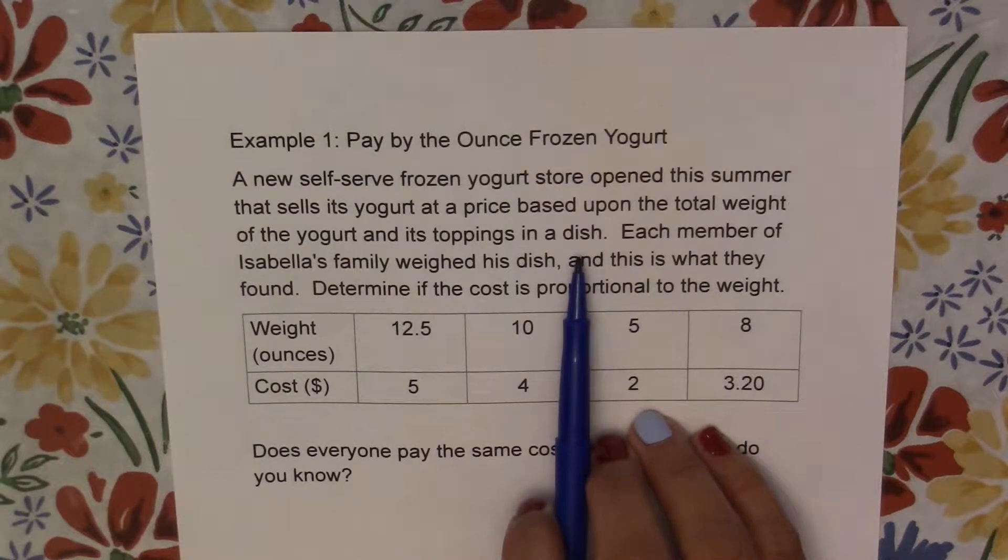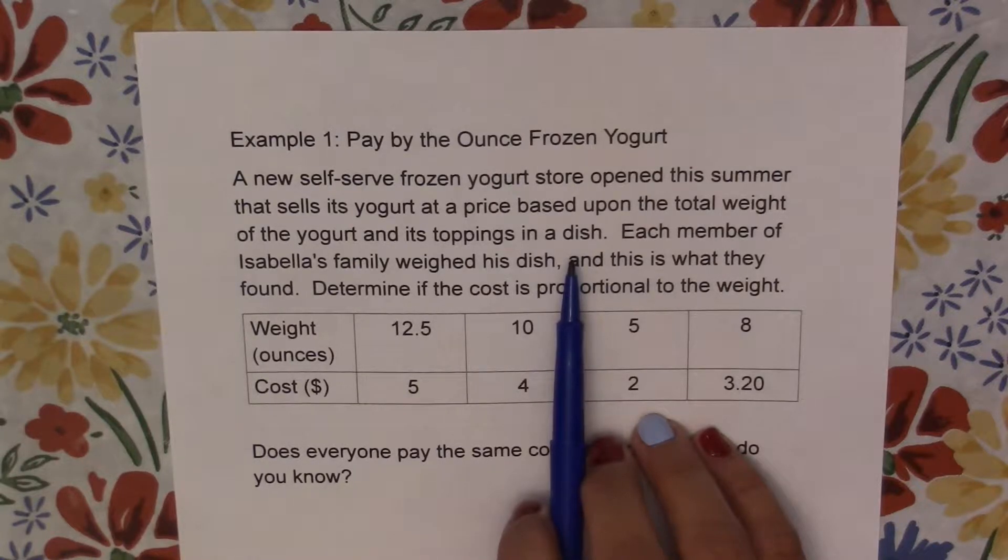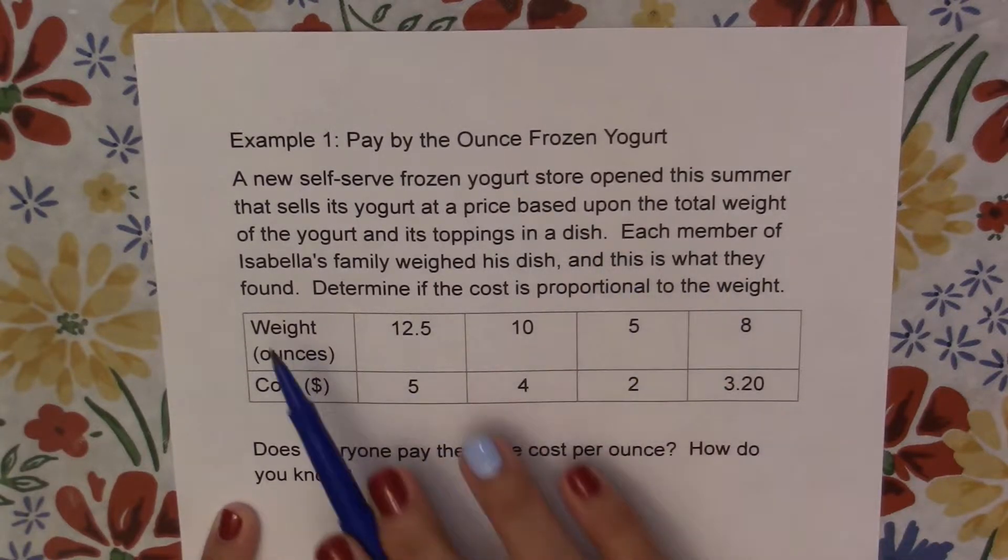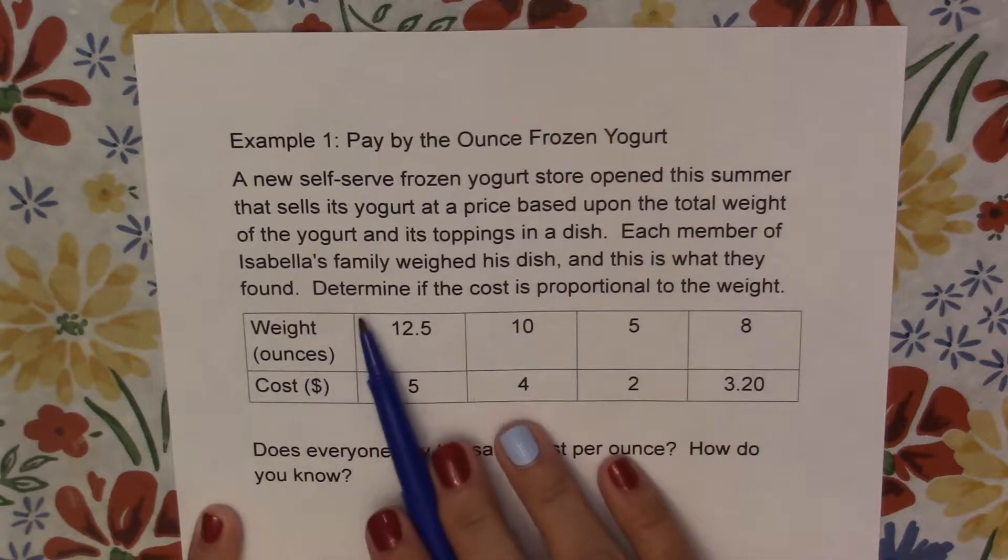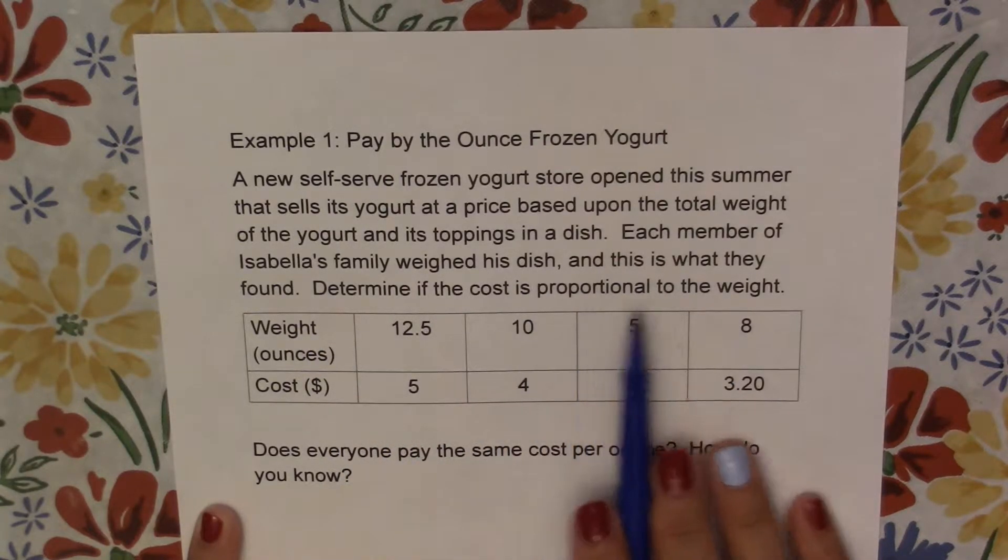This store would be similar to Orange Leaf. I know that one's here in town where you can go and get as much ice cream as you want. Each member of Isabella's family weighed his dish, and this is what they found. Determine if the cost is proportional to the weight.